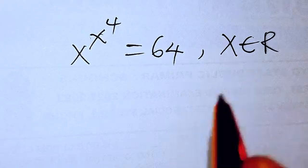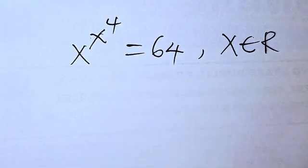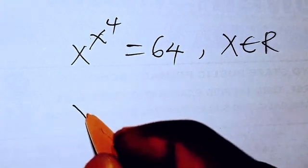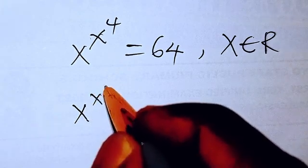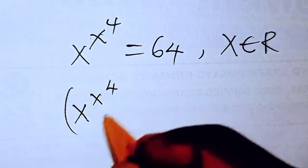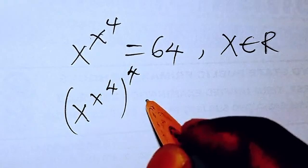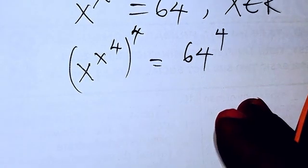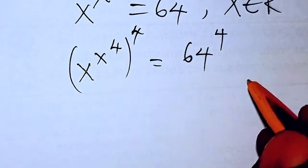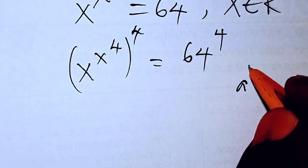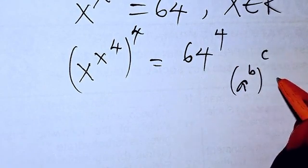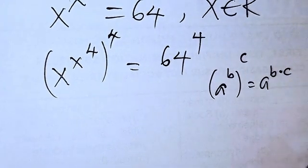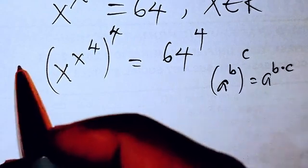So what are we going to do? I can take the 4th power of both sides by having (x^(x^4))^4 = 64^4. If you remember from the law of indices, (a^b)^c = a^(bc). So that's what we're going to use here.